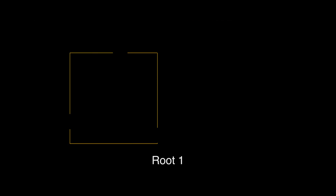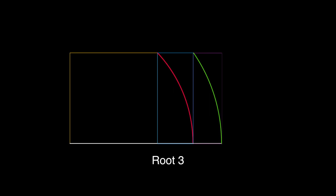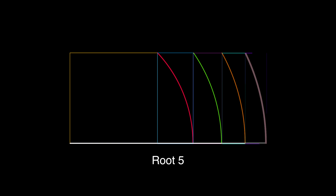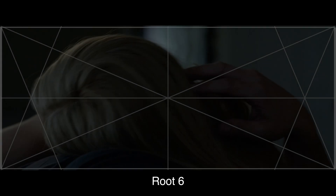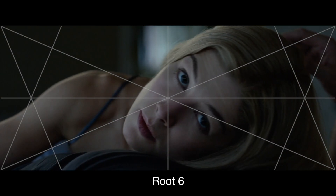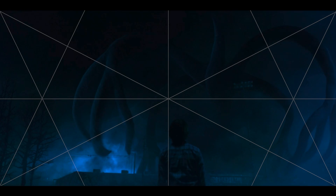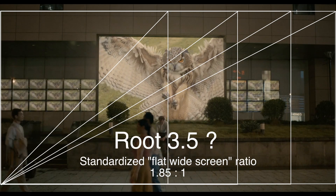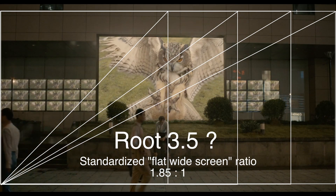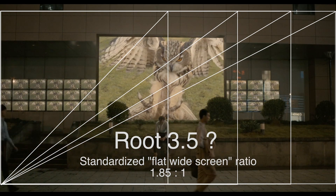The same process of using the diagonal is then applied to each subsequent rectangle, which makes the next rectangle. There is no set rule for which root to use. David Fincher likes to use a root 6. Stranger Things uses a 2 to 1 ratio, which is a root 4. And there are exceptions to the root rectangle rules.